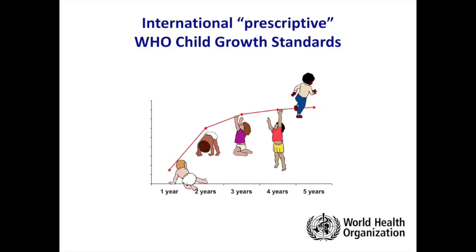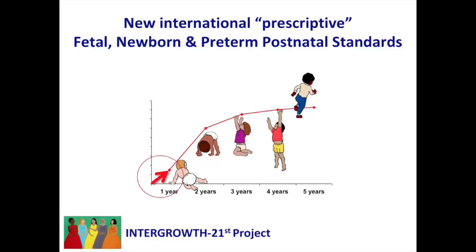This has justified 130 countries so far around the world adopting these standards to compare the growth of their children. So now when you hear that the rate of stunting in India is 30% and the rate of stunting in Kenya is 20%, you know that they're actually comparing the same thing — the definition means the same. In pregnancy and at birth we have not had this until now, and this is where the INTERGROWTH-21st project has come in, to extend this concept of defining an optimal growth trajectory into the perinatal period.